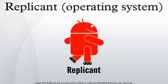Early versions of Replicant were based on the Android Open Source Project code, while versions 2.2 and later use CyanogenMod as their base in order to make supporting more devices easier. As development continued, many members of the original Replicant team retired from the project. In April 2011, Paul Koscialkowski decided to get involved with the project and gradually became the main Replicant developer, after successfully porting it to the Nexus S and Galaxy S devices.